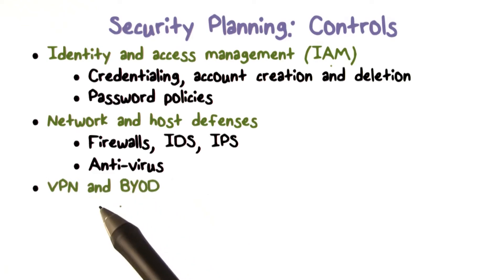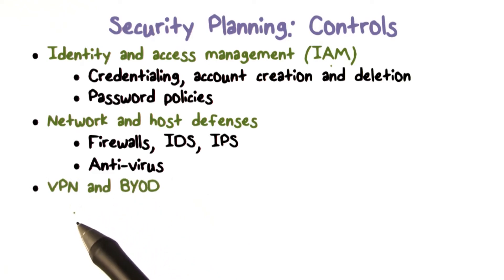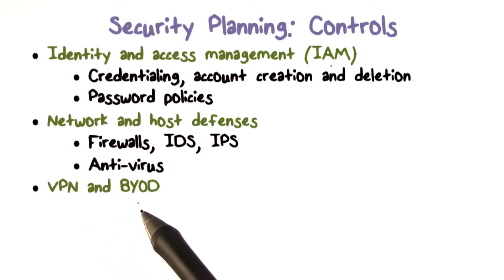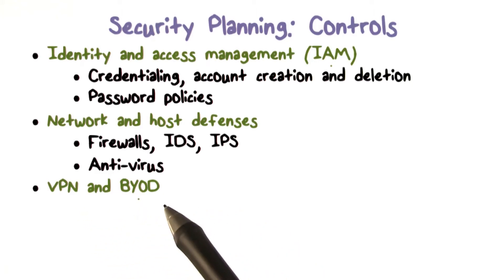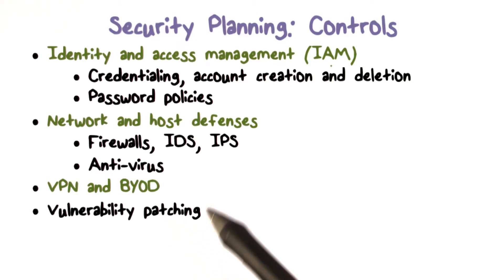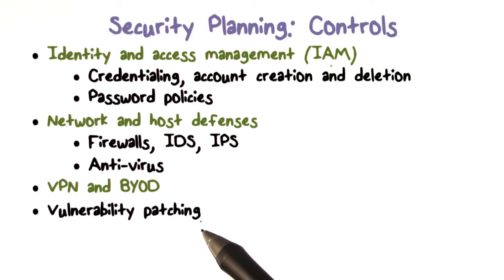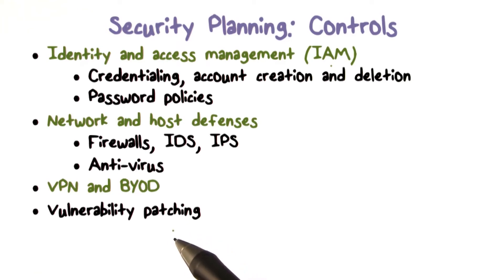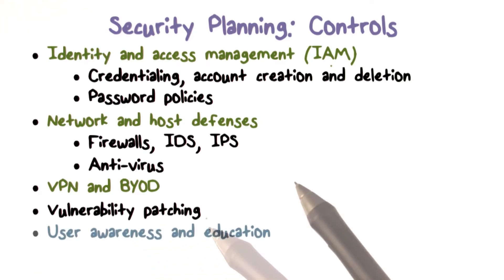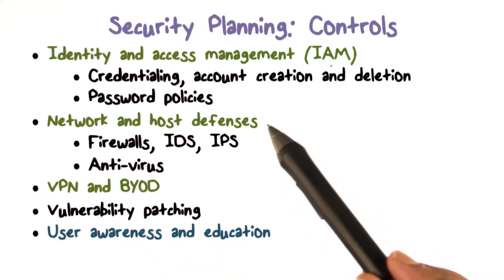If people access our systems and networks from outside, we may require a VPN — a virtual private network — solution. If they bring their own devices, that may necessitate something else. The software we run on our systems may have vulnerabilities discovered, and patches may become available.